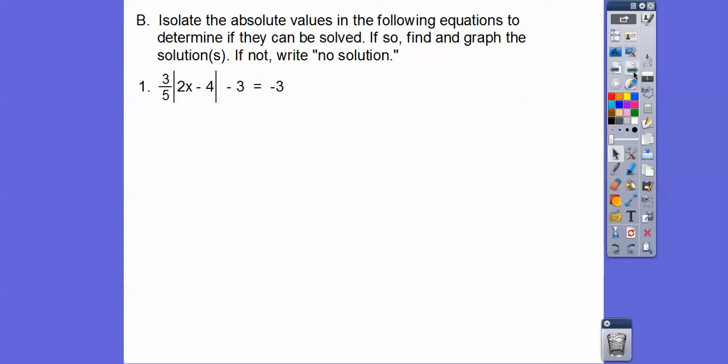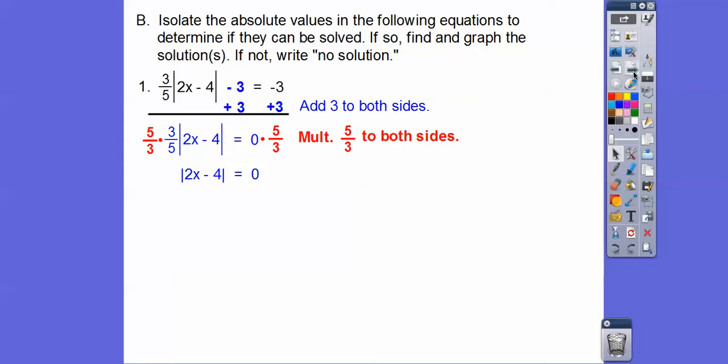Here's another one here. Isolate the absolute values in the following equation to determine if they can be solved. If so, find and graph the solutions. If not, write no solution. So plus 3 plus 3, and then multiply by the reciprocal, 5 thirds.